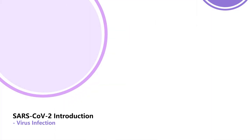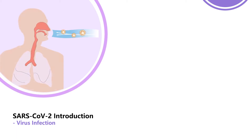First, let's get started with a brief introduction on SARS-CoV-2 infection. SARS-CoV-2 is a beta coronavirus, which spreads to oral cavity and respiratory mucosal cells through respiratory droplets to infect the host. After infection, it can cause respiratory tract and other related diseases.